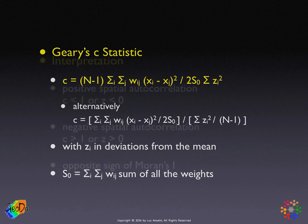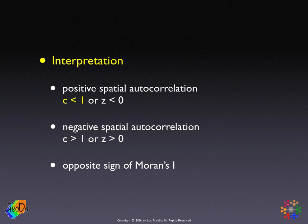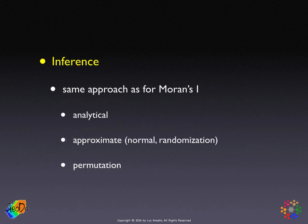The interpretation of Geary's C is a little counterintuitive, but not if you think about it a bit more. Positive spatial autocorrelation corresponds to a Geary's C coefficient less than 1, or a Z value that is negative. Negative spatial autocorrelation corresponds to a Geary's C value larger than 1, or a Z value that is positive — so it's the opposite of Moran's I, because it is focused on dissimilarity rather than similarity. Inference operates in the same way: analytical approximations using normality or randomization, and a computational approach based on permutation.